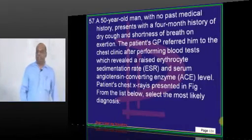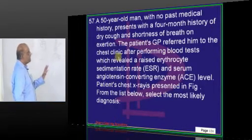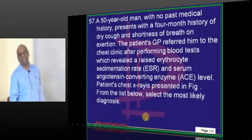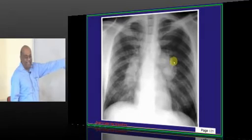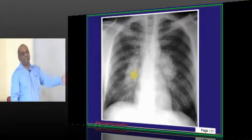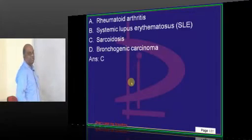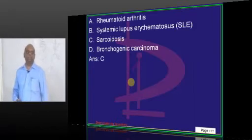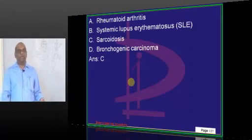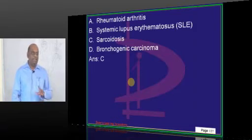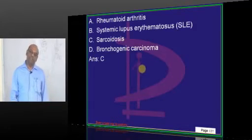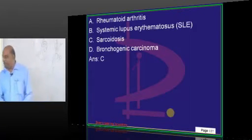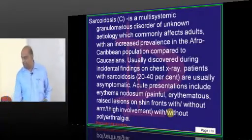A 50-year-old with no past medical history presents with dry cough, shortness of breath. ESR is elevated and angiotensin-converting enzyme is elevated. Bilateral hilar lymphadenopathy is present. On history alone you can diagnose sarcoidosis. How does sarcoidosis differ from tuberculosis on biopsy? Non-caseating granuloma is a feature of sarcoid; caseating granuloma is a feature of TB. Both TB and sarcoid are capable of causing hilar lymphadenopathy.